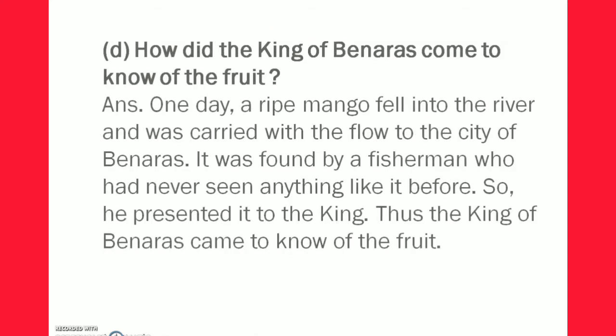Question D: How did the king of Banaras come to know of the fruit? मतलब बनारस के राजा को फल का पता कैसे चला? Answer: One day, a ripe mango fell into the river and was carried with the flow to the city of Banaras. It was found by a fisherman who had never seen anything like it before. So he presented it to the king. Thus the king of Banaras came to know of the fruit.